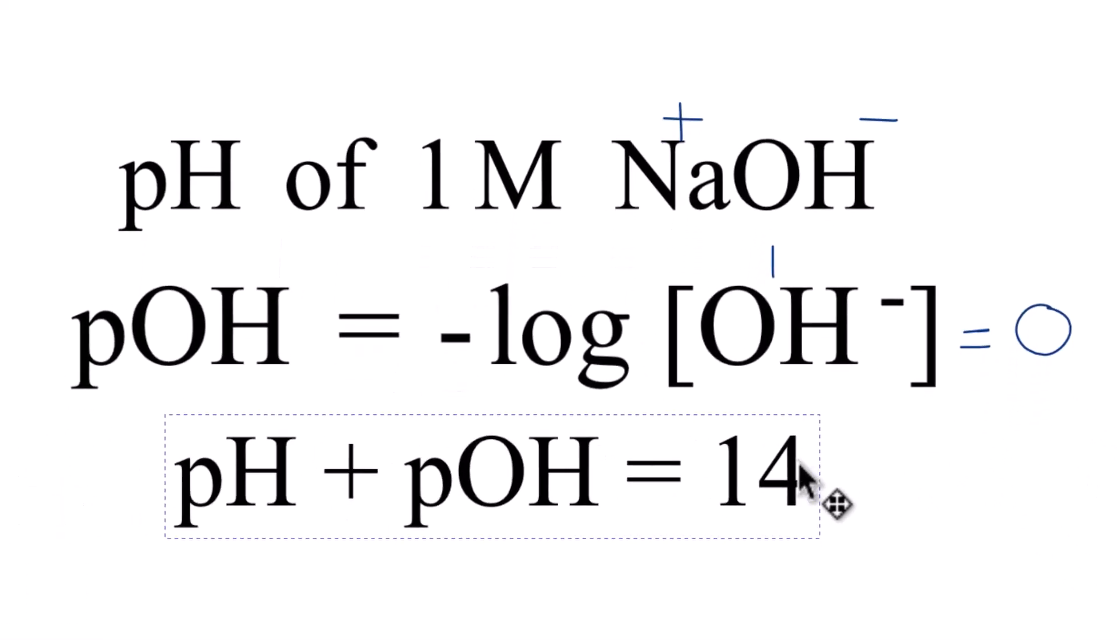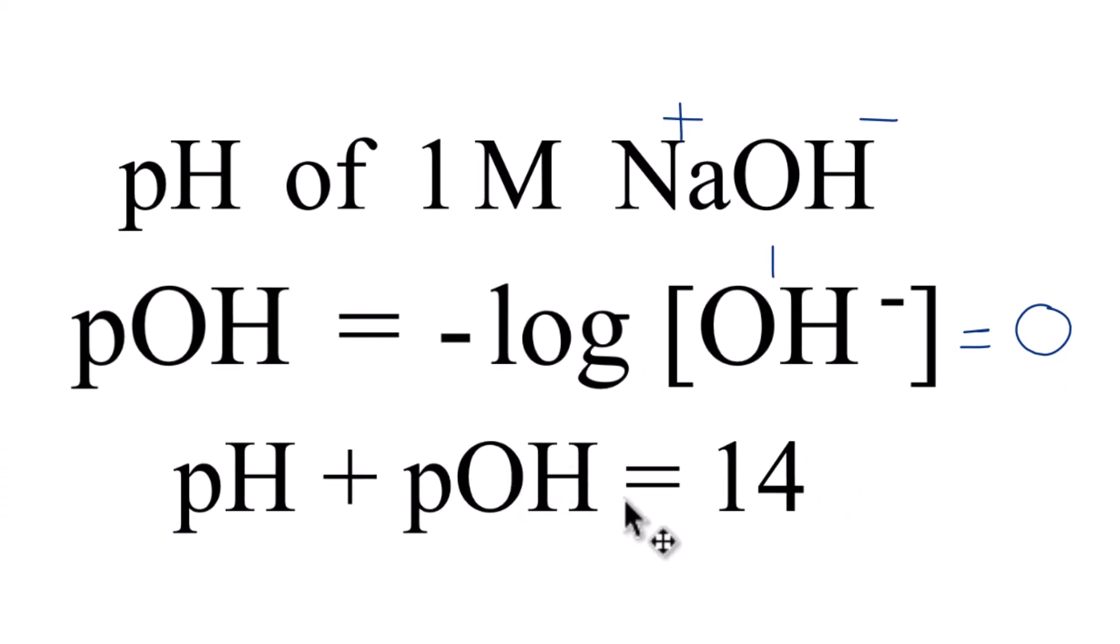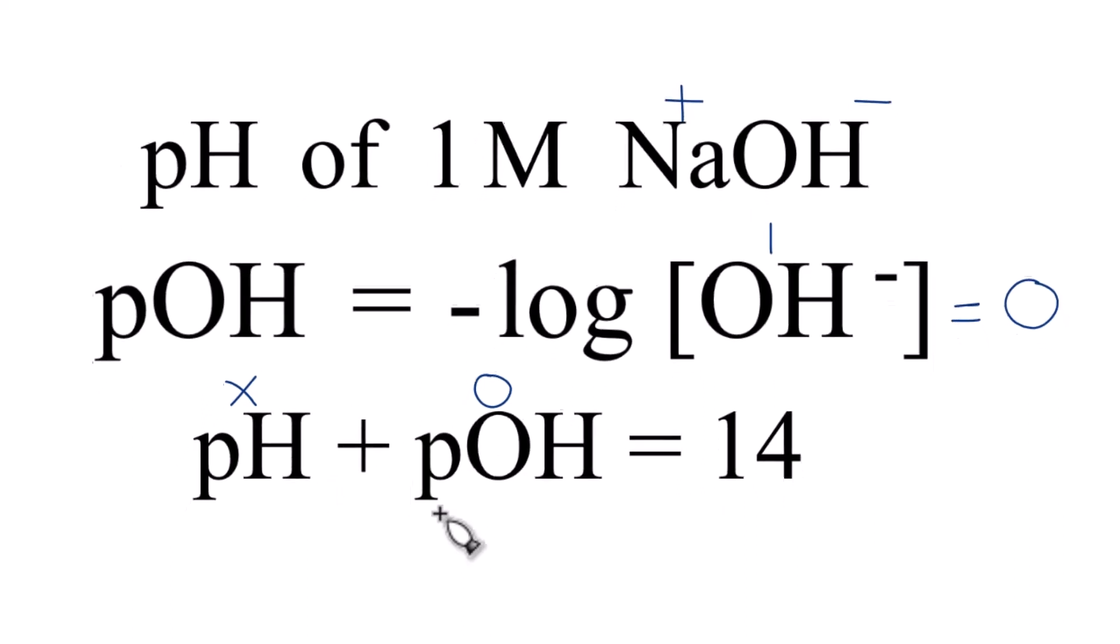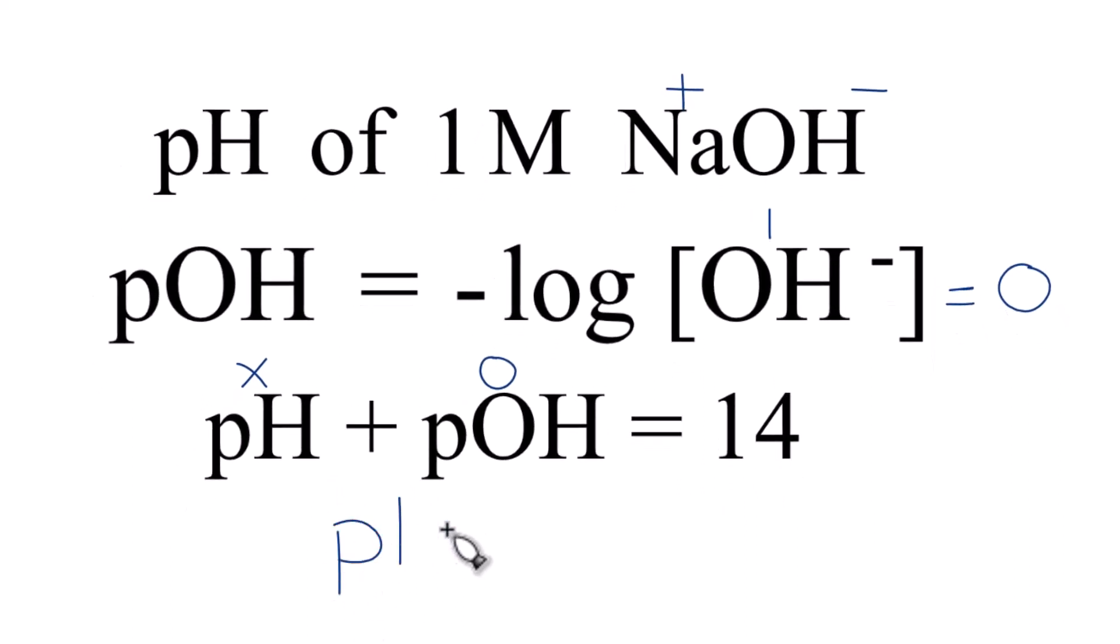Now we can find the pH, because pH plus pOH equals 14. We said the pOH is 0, so some number plus 0 gives us 14. Well, 14 plus 0 is 14. So the pH of a 1 molar solution of sodium hydroxide is 14.